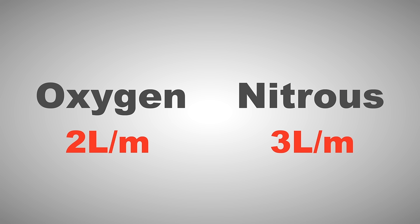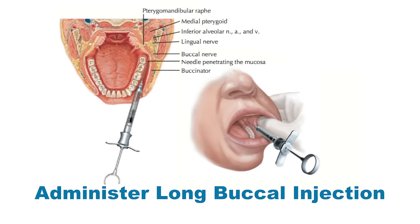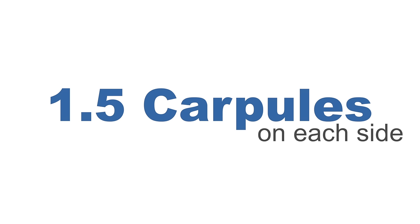Before moving to the opposite side, adjust the nitrous oxide flow rate back to the standard 3 liters per minute of oxygen to 2 liters per minute of nitrous oxide. Next, administer a long buccal injection posterior to the primary second molar or first permanent molar depending on the child's current dentition. This will ensure profound anesthesia for your patient. Proceed to the opposite side and repeat. This will essentially give the child 1.5 carpules on each side.